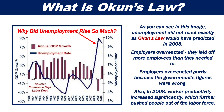As you can see in the image to the left, unemployment did not react exactly as Okun's Law would have predicted in 2008. Employers overreacted — they laid off more employees than they needed to, partly because the government's figures were wrong.